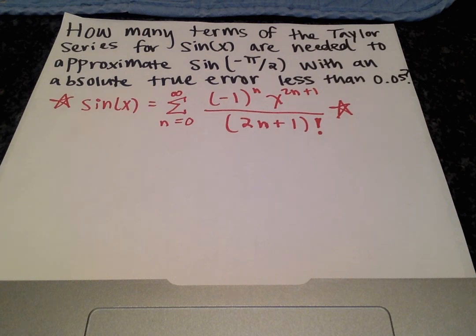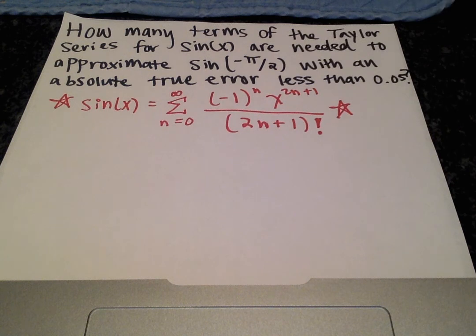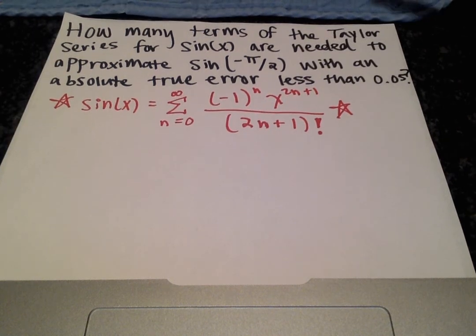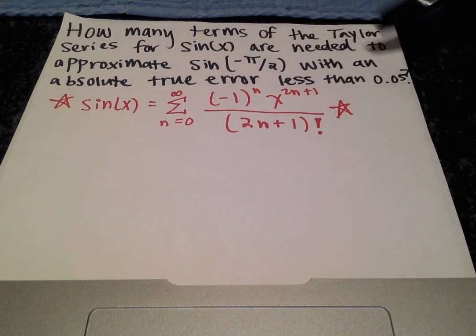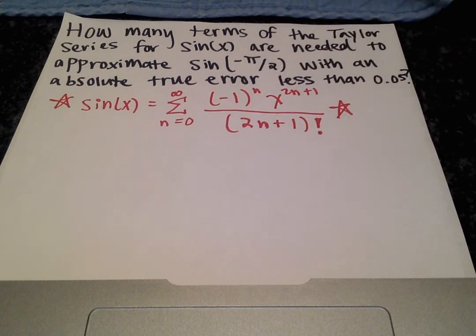We have a numerical methods problem and we're going to be using the Taylor series to approximate the value of sine of negative pi over 2. Our problem statement is: how many terms of the Taylor series for sine of x are needed to approximate sine of negative pi over 2 with an absolute true error less than 0.05? Let's break it down.